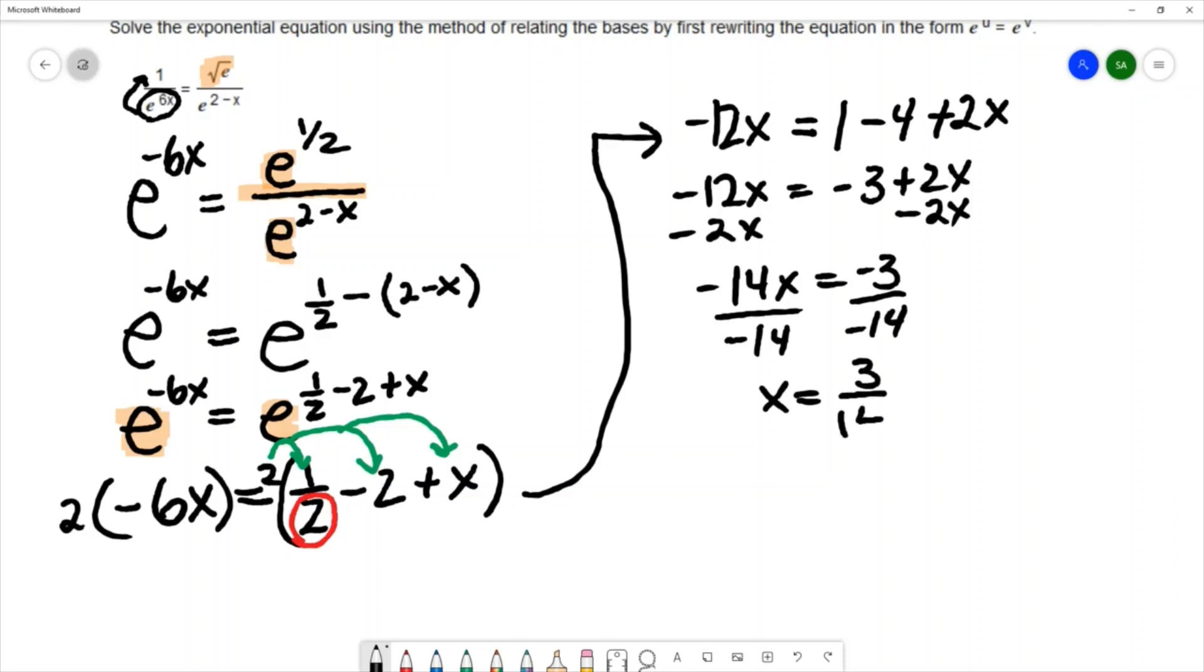That reduces to 3 over 14. So the solution to 1 over e to the 6x equals square root of e over e to the 2 minus x is 3 14ths.